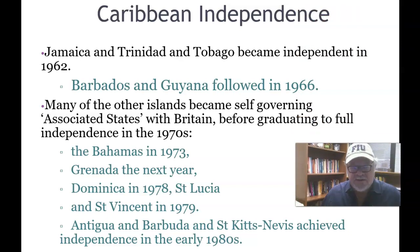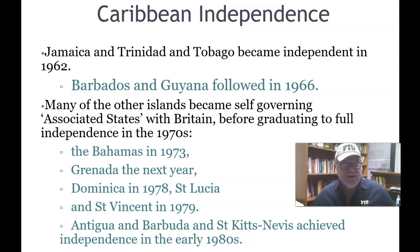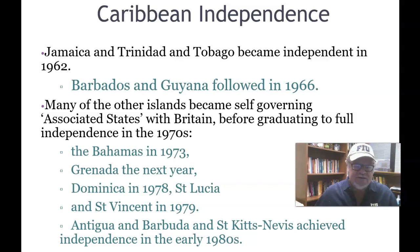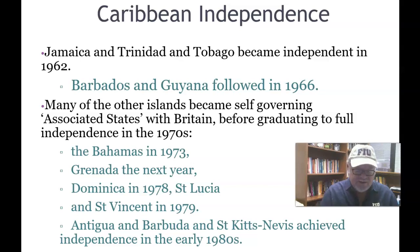Caribbean independence: Jamaica and Trinidad and Tobago became independent in 1962. Barbados and Guyana followed in 1966. Many of the other islands became self-governing associated states with Britain before graduating to full independence in the 1970s. The Bahamas, Grenada, Dominica, St. Lucia, and St. Vincent gained independence in 1979. Antigua and Barbuda, and St. Kitts and Nevis achieved independence in the early 1980s.